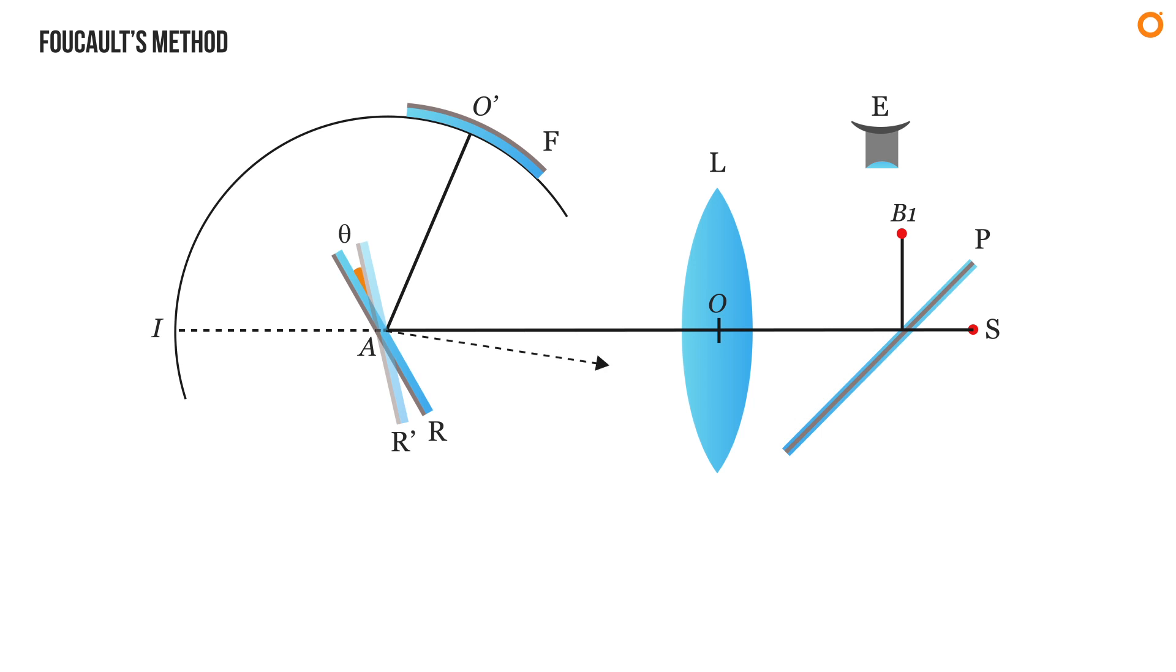As a result, the image is now formed at B2 and therefore appears to come from S1. If we produce the reflected ray of light backward of rotating mirror, then we find that it appears to come from I1. As we know that if the mirror is rotated through an angle theta, the reflected ray rotates through an angle 2 theta.